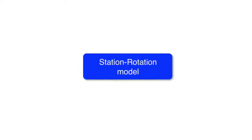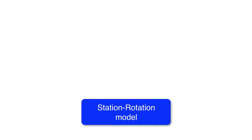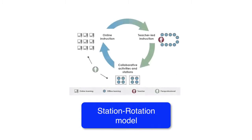iNACOL also defines four models to implement blended learning. First up, the rotational model. Let's dive into the station rotation model. This diagram of the model is based on how KIPP LA Empower Academy implements the station rotation model in their curriculum.